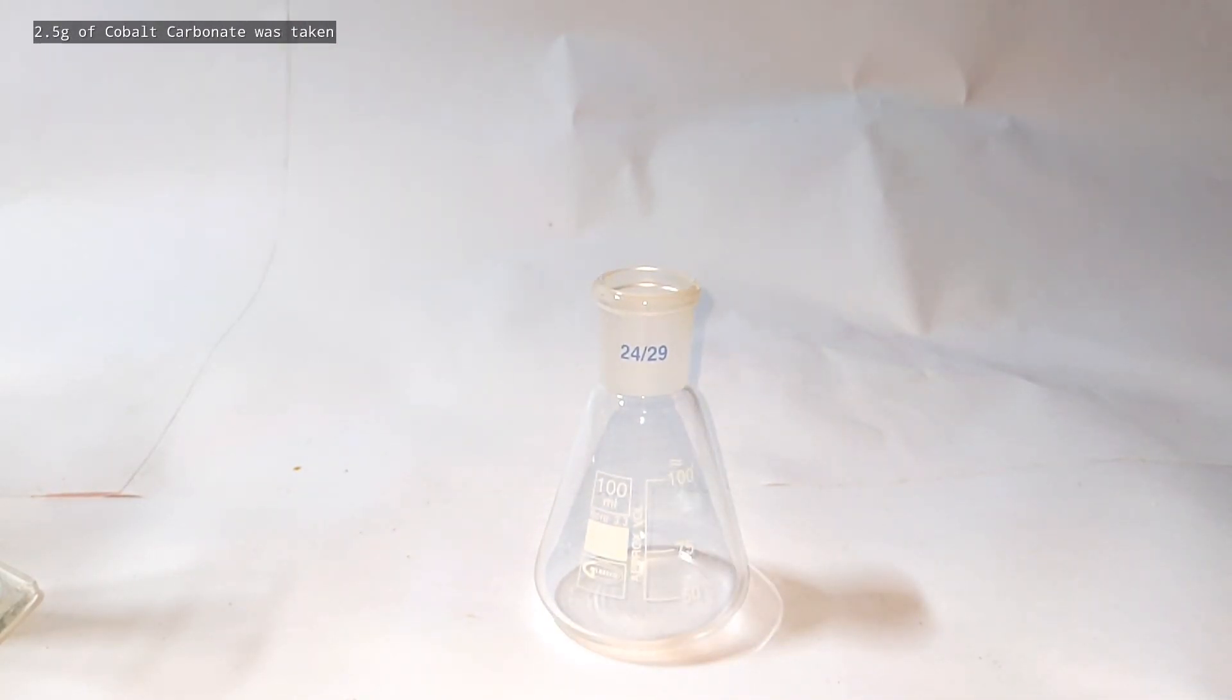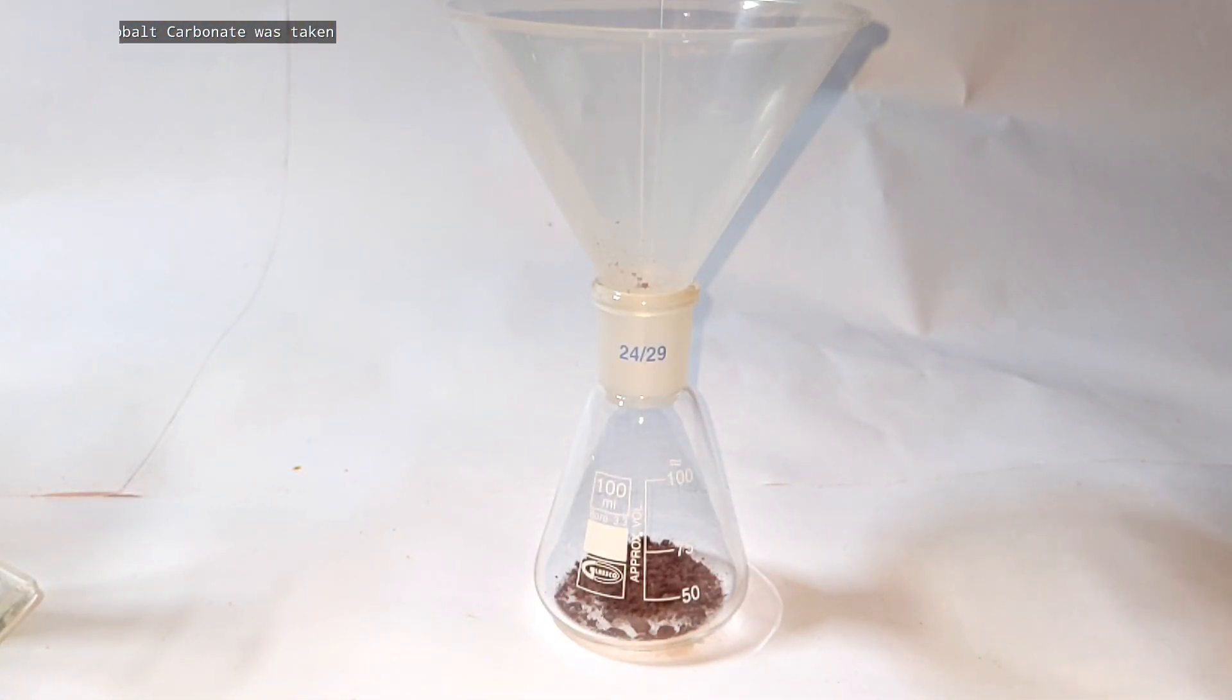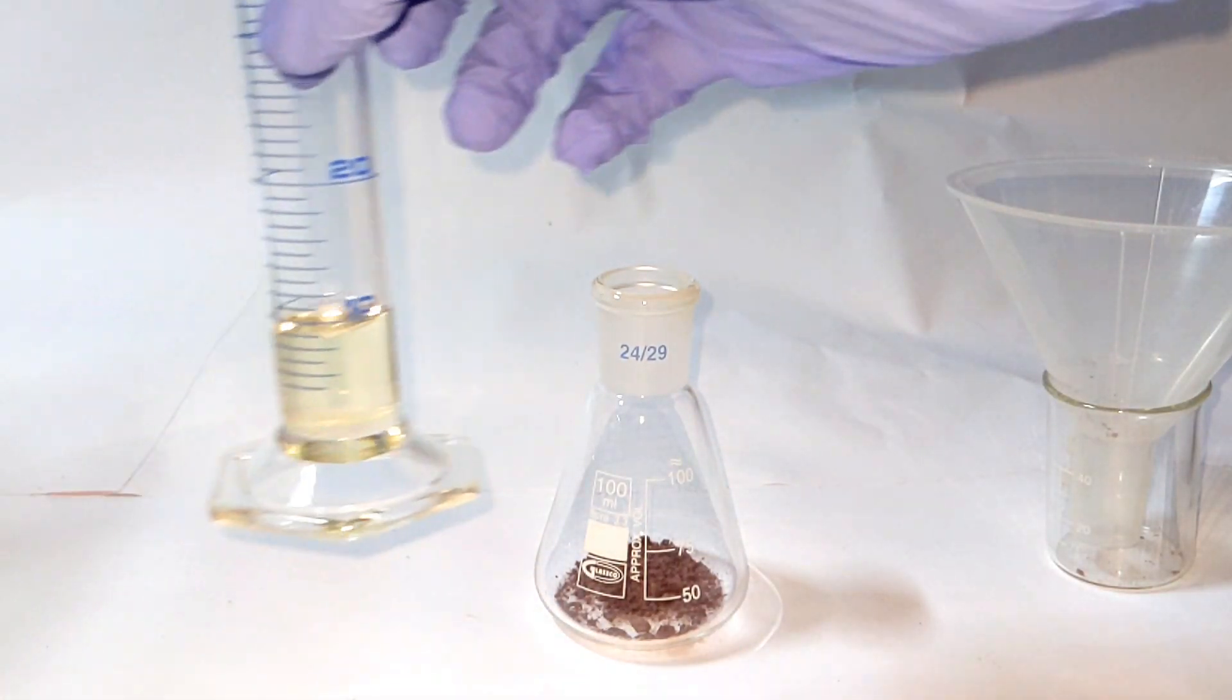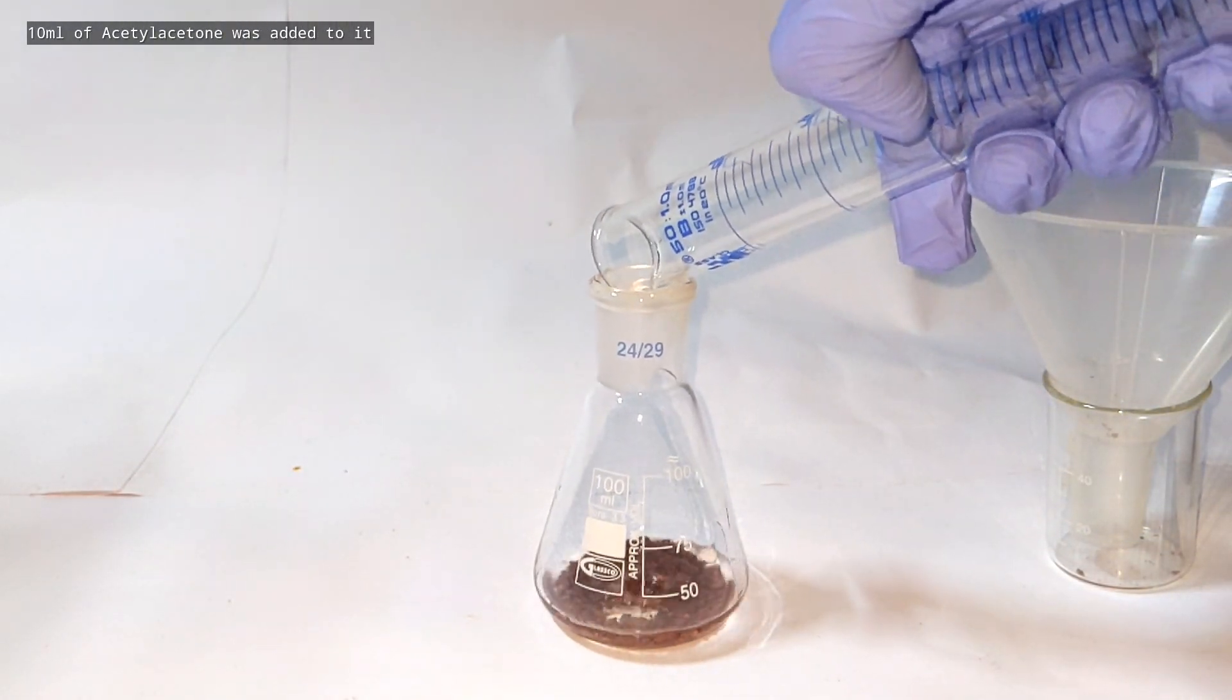A 100 milliliter Erlenmeyer flask was taken and into that was added 2.5 grams of cobalt carbonate, then 10 milliliters of Acetyl-Aceton was added.